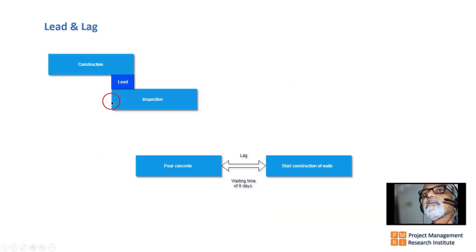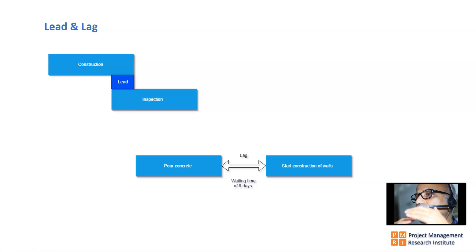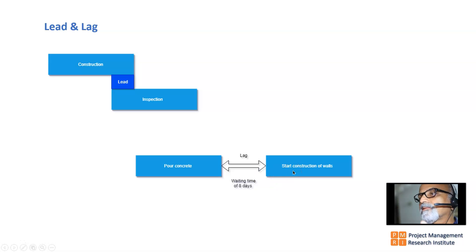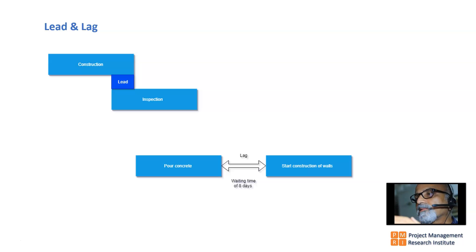Leads and lags: consider Activity Construction and Activity Inspection. When construction is about 80% complete, inspection can start — this is called a lead, which means some amount of parallelism. Similarly, when testing is 30% complete, defect fixing can begin. Lag, on the other hand, is waiting time — for example, after pouring concrete you must wait eight days before starting the next activity. A lag always stretches the schedule, whereas a lead always compresses it.